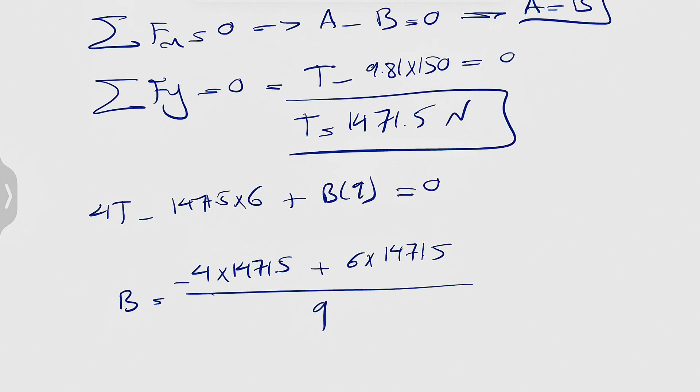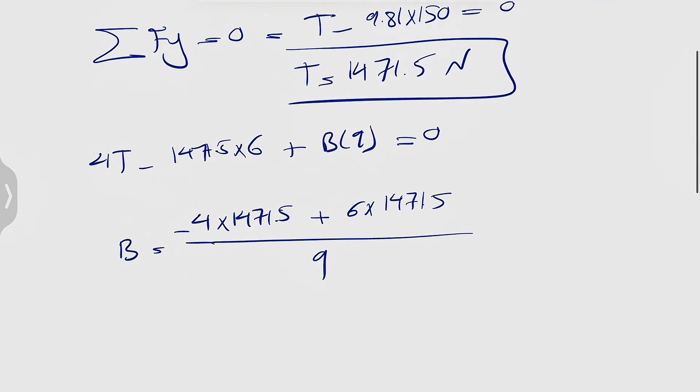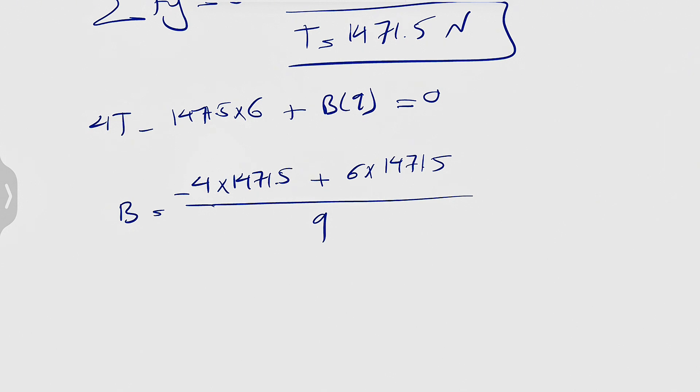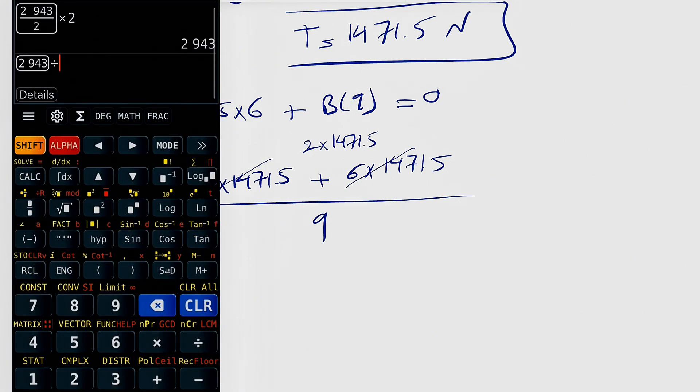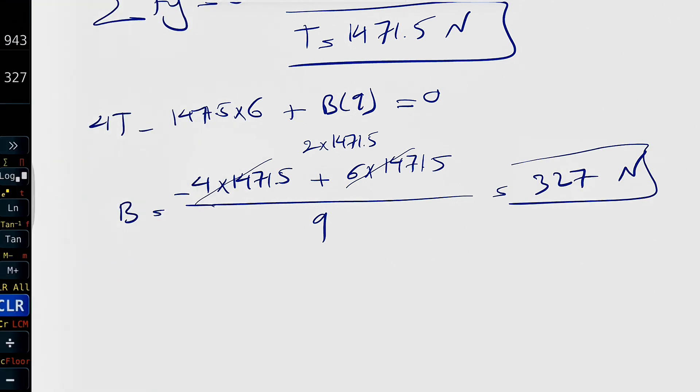Actually, this will be negative. This will be positive because we bring it on the other side of the equation. So let's just calculate this. And this will be basically, if we factor 1471.5, it would be 2 times 1471.5 divided by 9, so times 2 divided by 9. This is going to give us 327 Newtons.